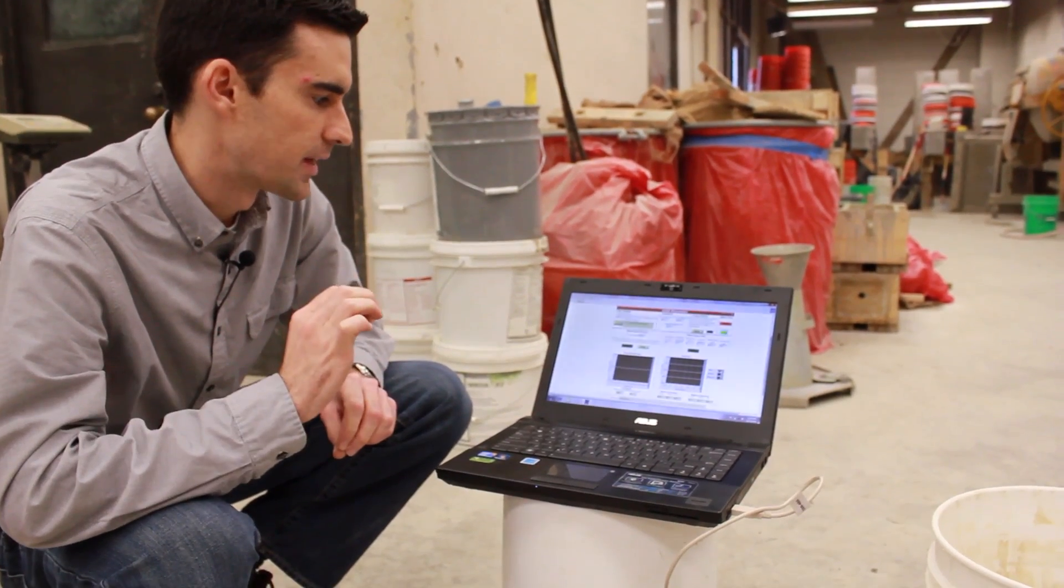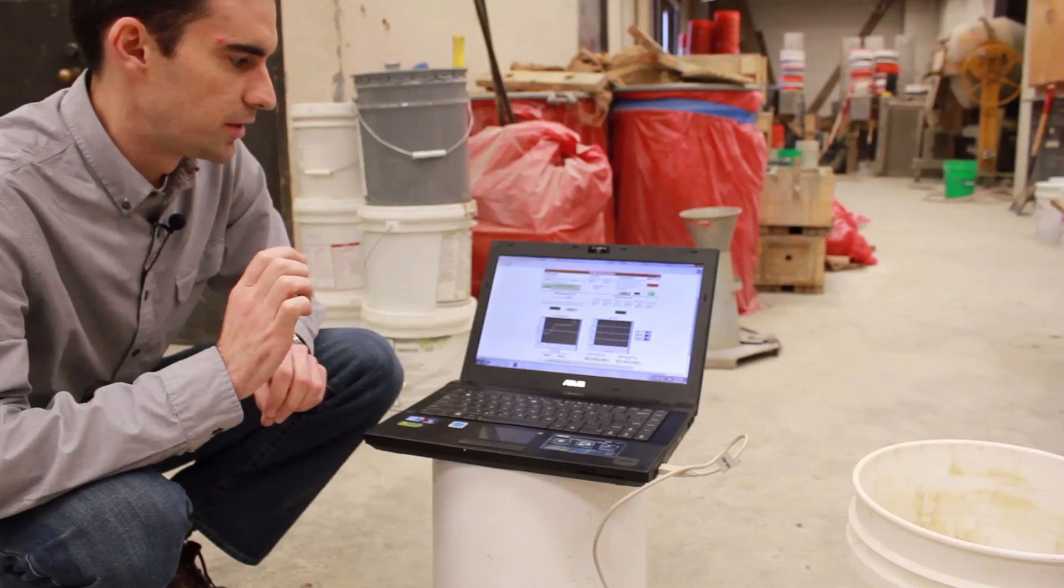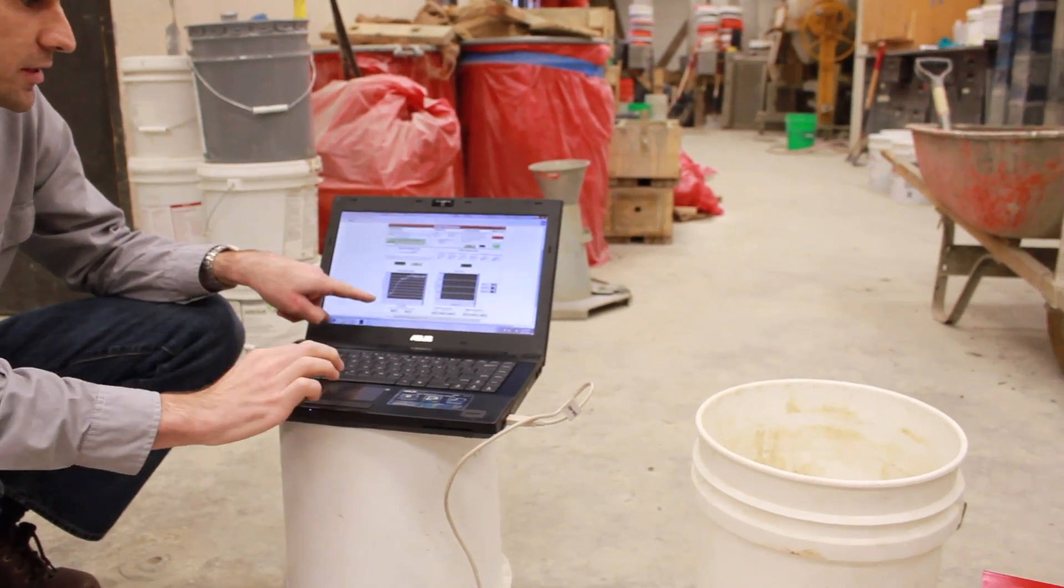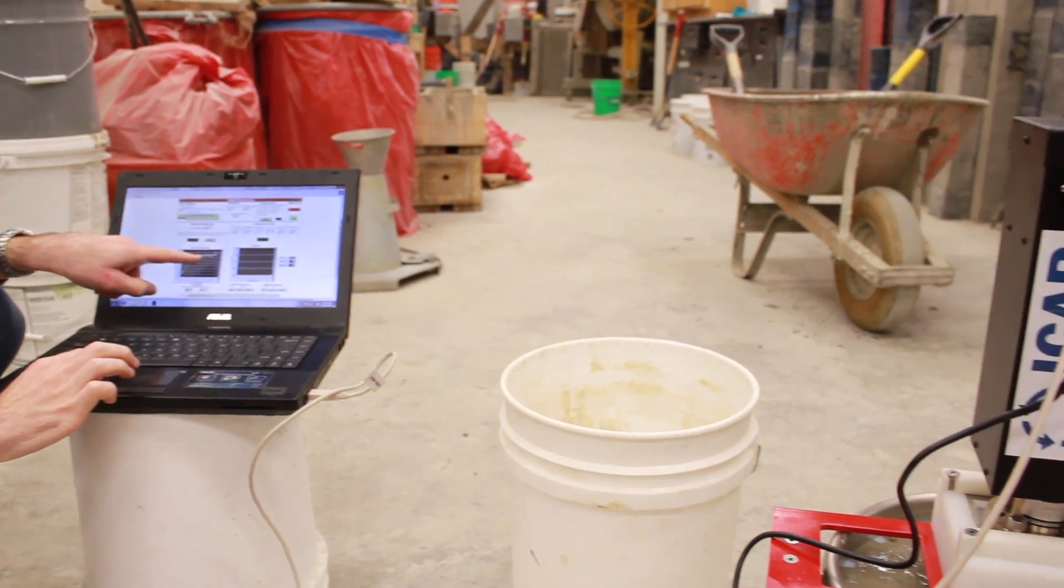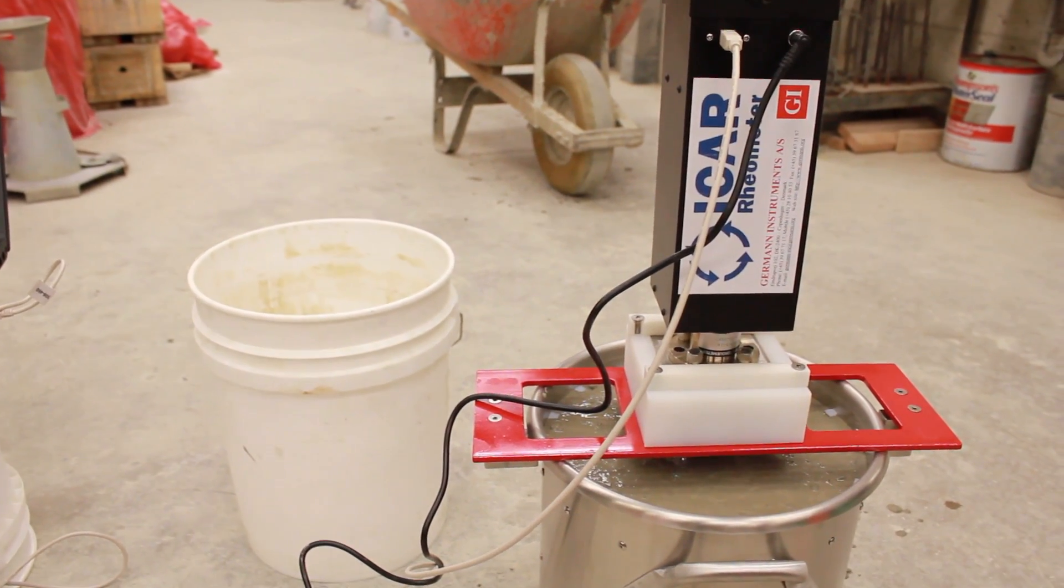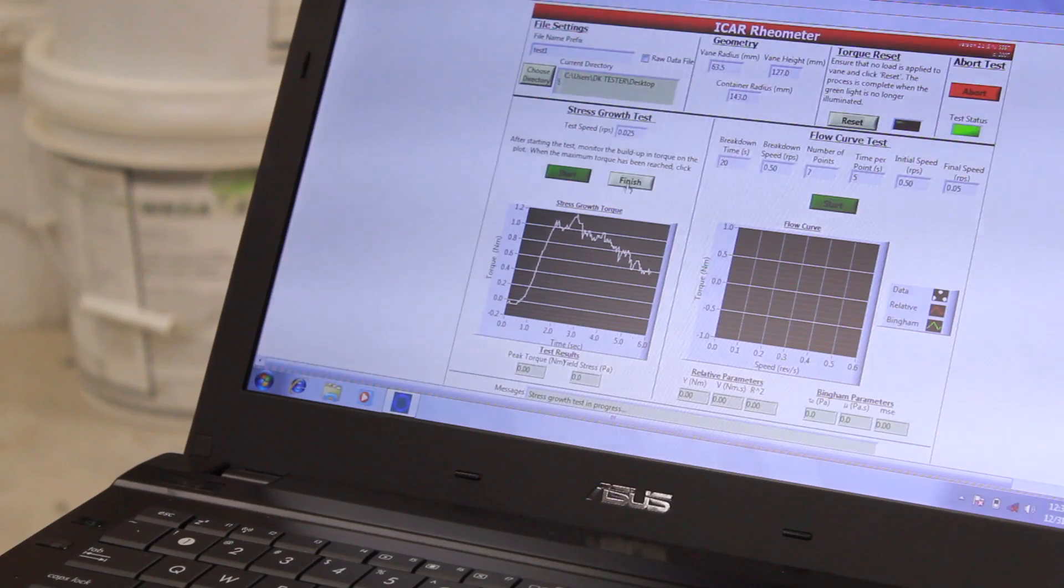It takes a few seconds to start the test. Once it starts, you'll hear the rheometer turning and you'll see the stress gradually increase. You'll watch till it hits a maximum, which is related to the static yield stress. Once we see that it's hit a maximum, we hit finish and we're done with the test.